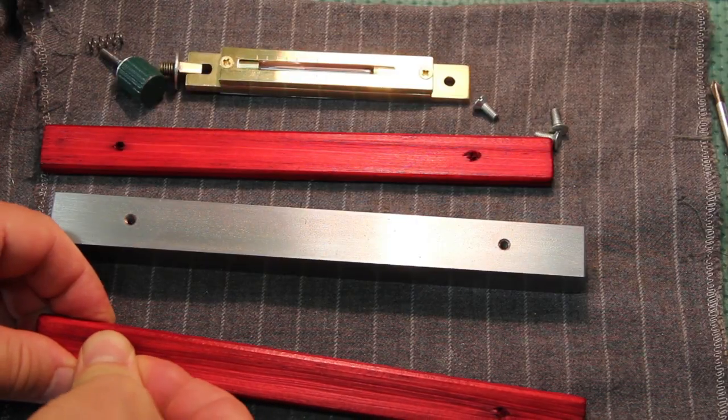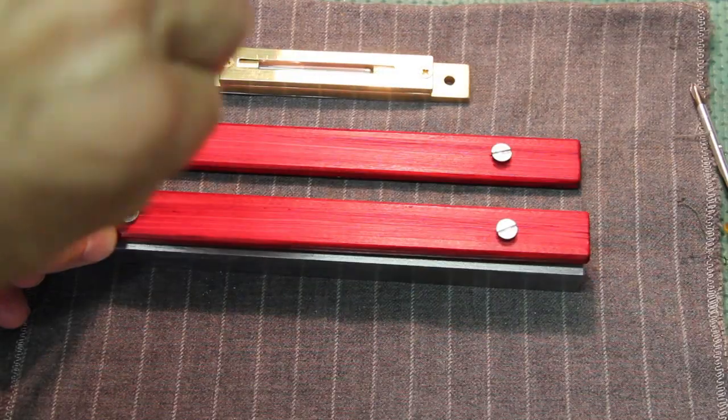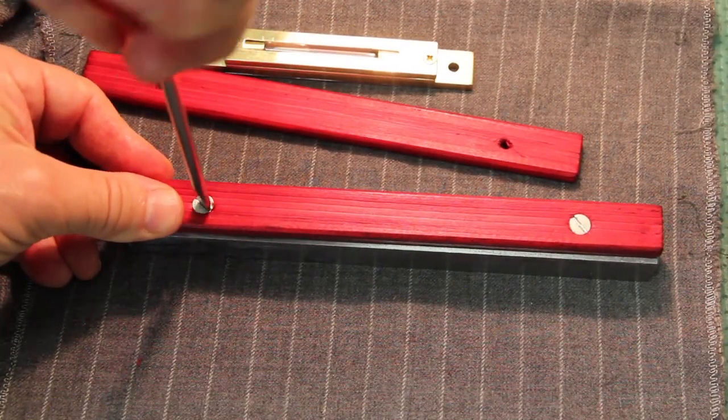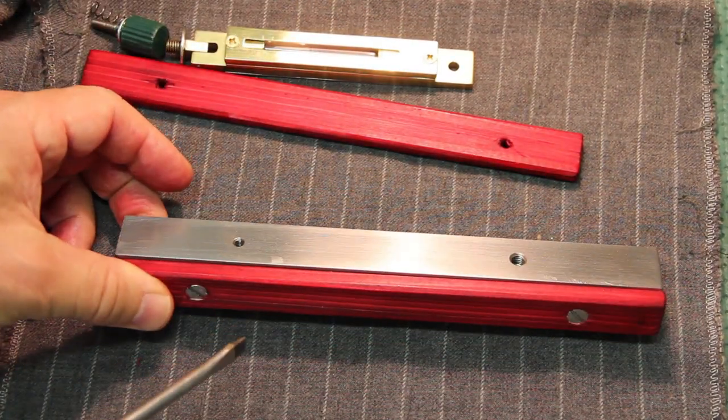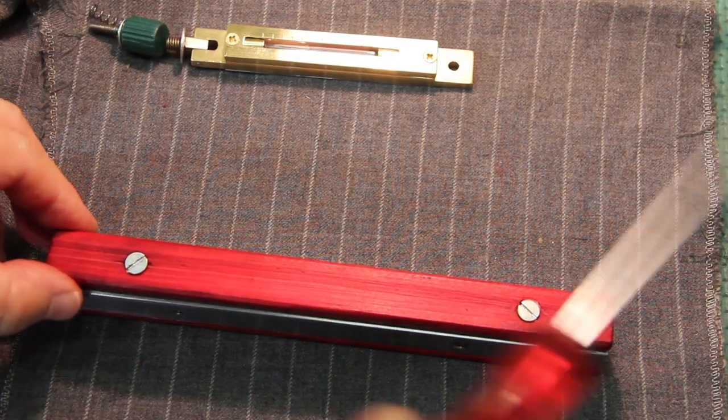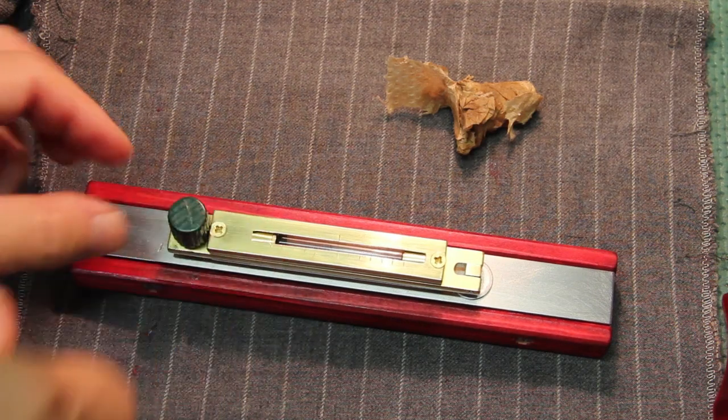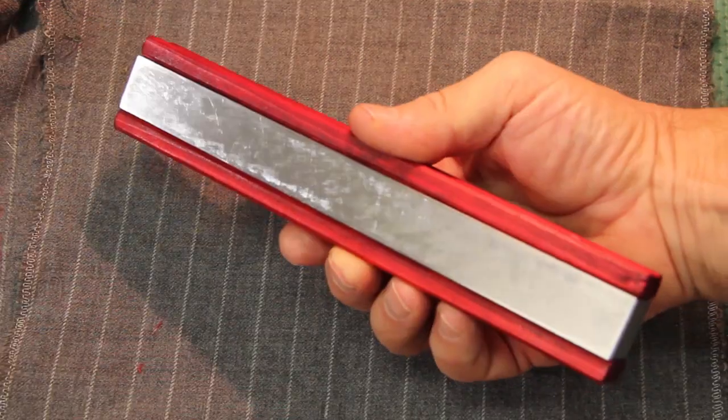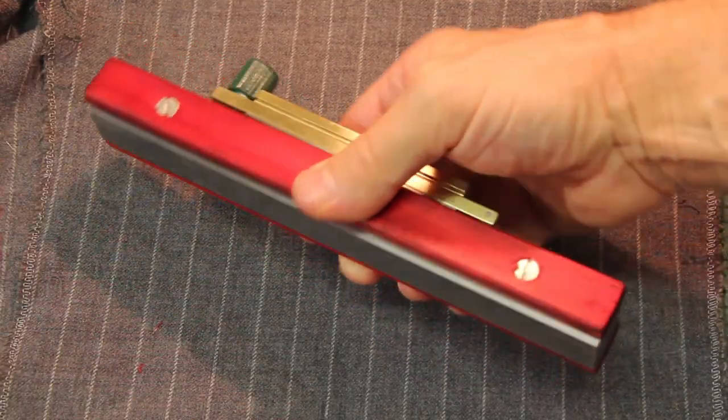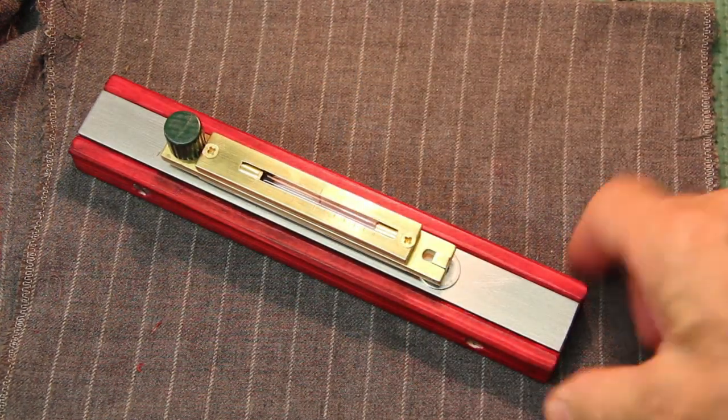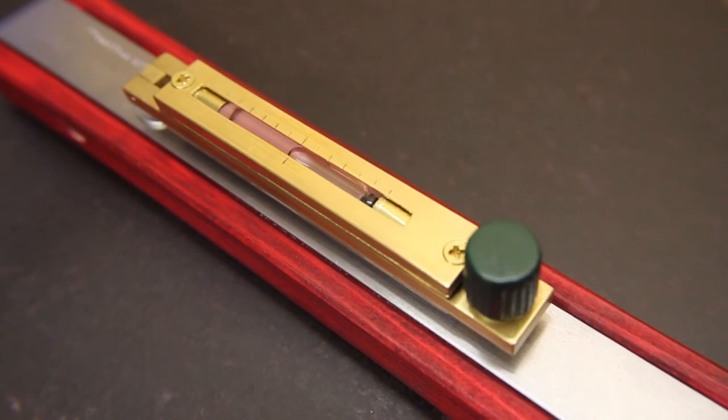And then I used shellac dye to color it in red, and further transparent shellac to protect the wood. This created two nice handles that are screwed onto the sides of the base of the level. Not only these handles offer a better grip, but also help to thermally isolate the level from the heat coming from the hand. And this is the final product.